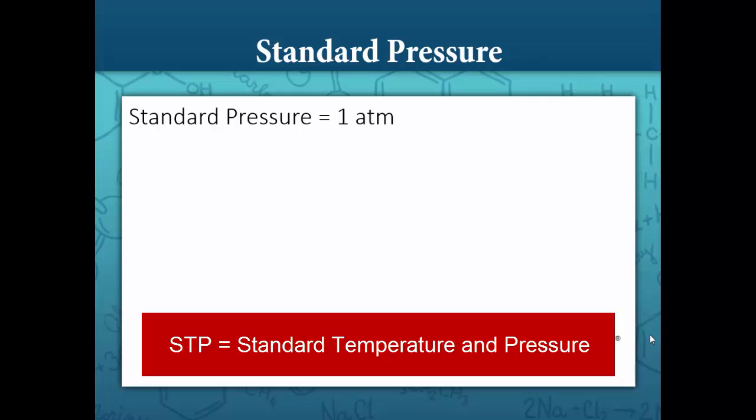Let's define standard pressure to be one atmosphere and standard temperature as 273.15 Kelvin, or what works for us is a rounding of that, 273 Kelvin.